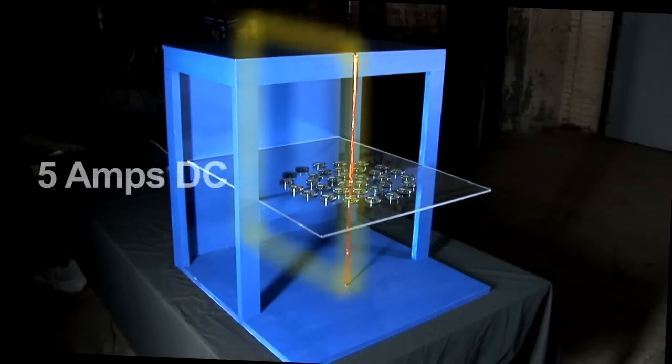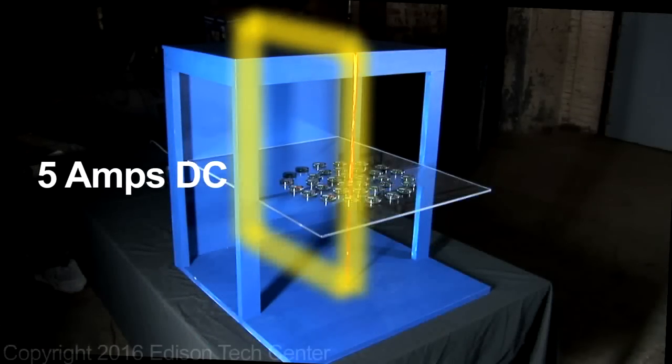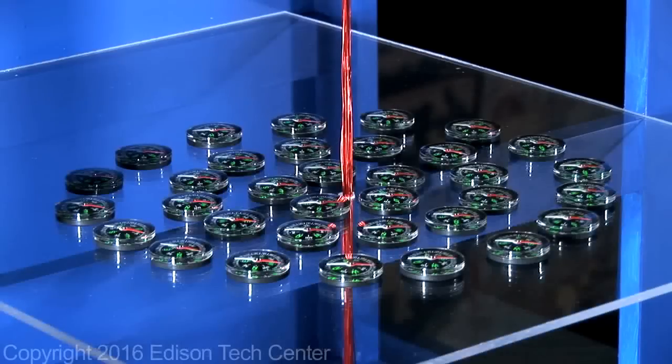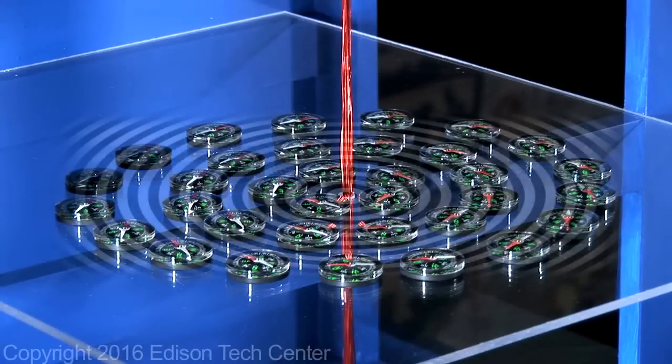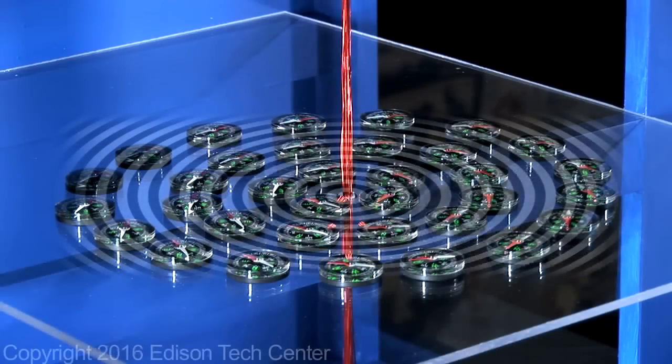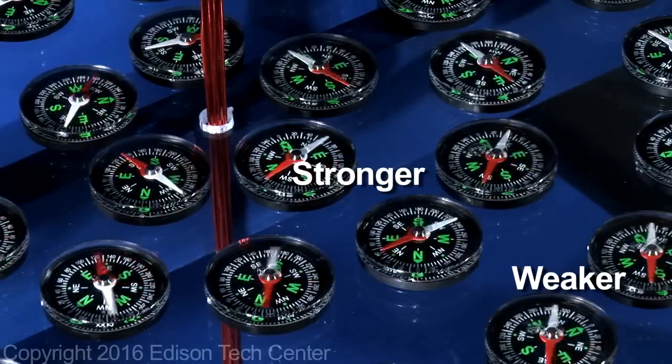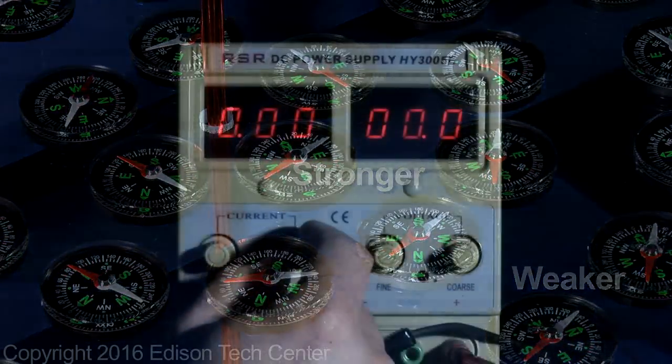In this exercise you can see how an electric current creates a circular magnetic field around the wire. The farther out you go from the wire, the weaker the field, and the higher the amperage pumped through the coil, the stronger the effect.